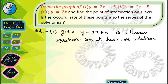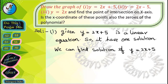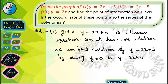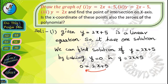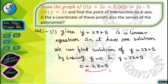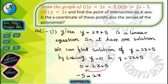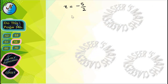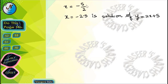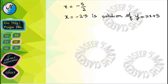To resolve the first problem, y = 2x+5 is a linear equation so it has one solution. We find the solution by taking y = 0 in the equation y = 2x+5. After substituting y = 0 we get 0 = 2x+5. Transposing 5 gives -5 = 2x, so x = -5/2. After dividing, we get x = -2.5 as the solution of y = 2x+5.